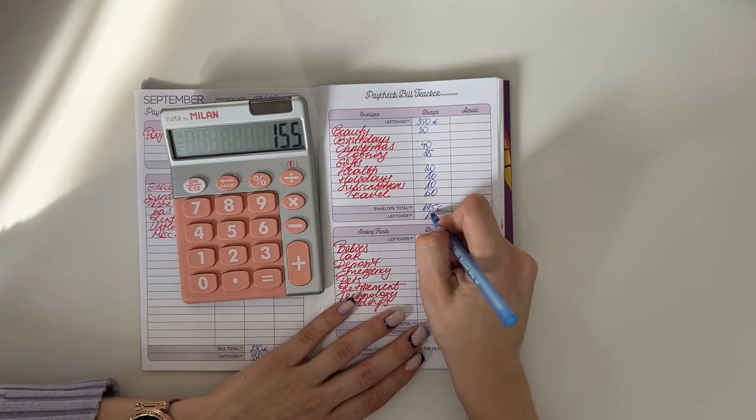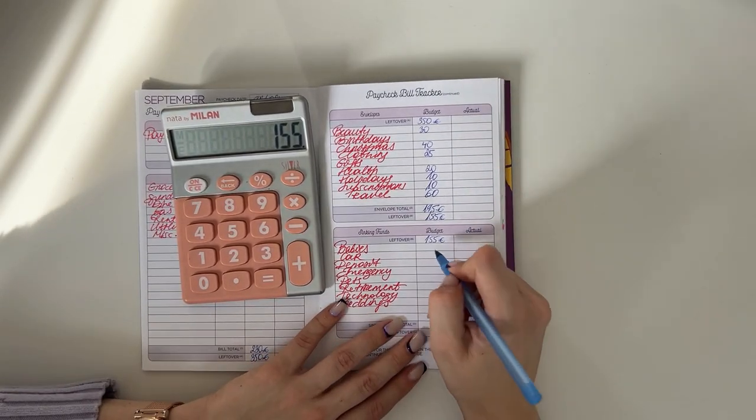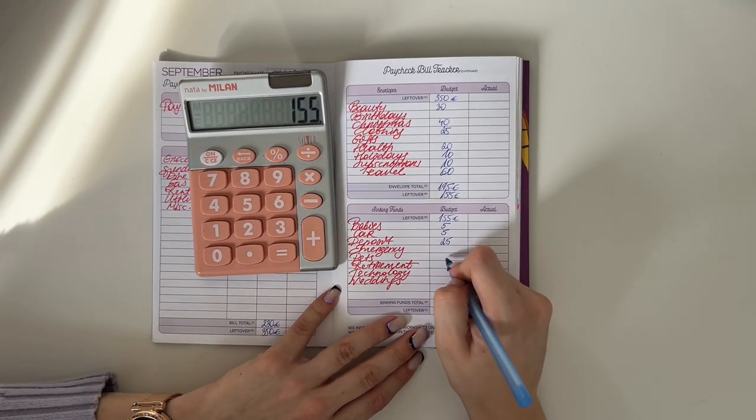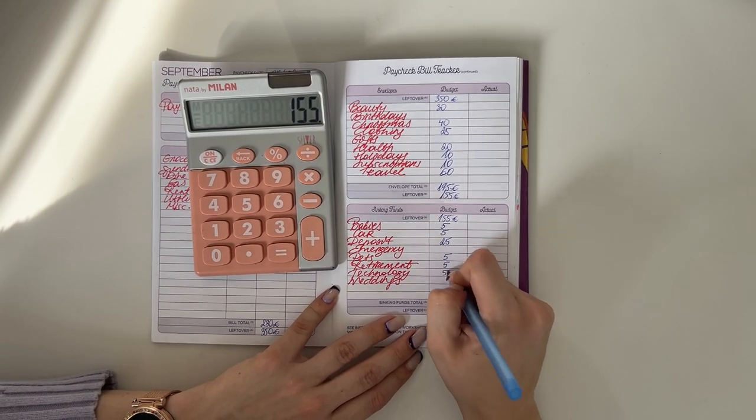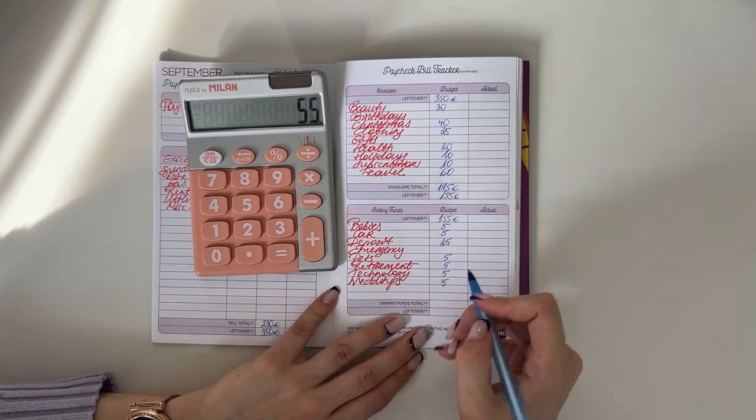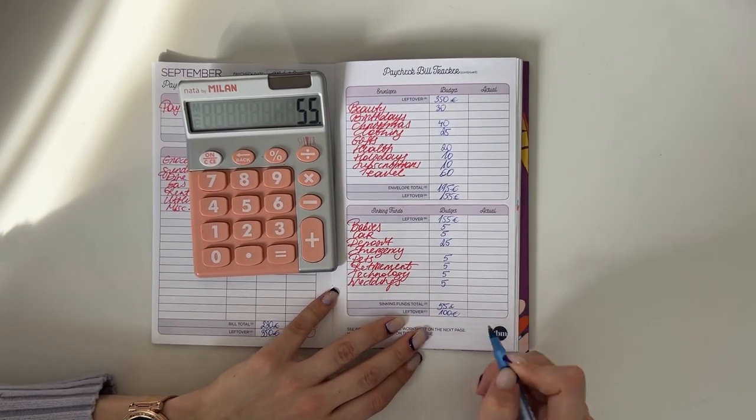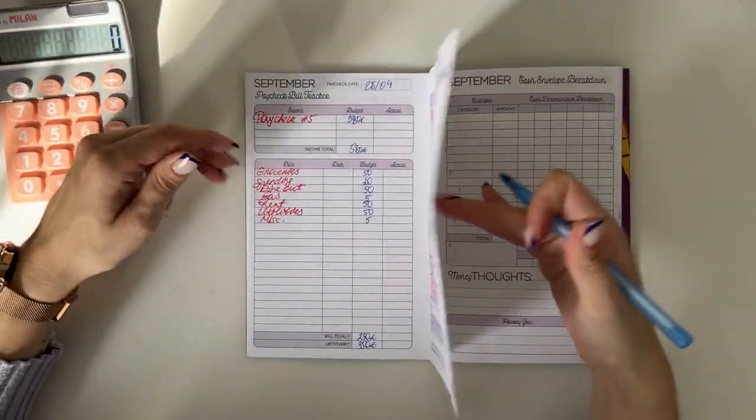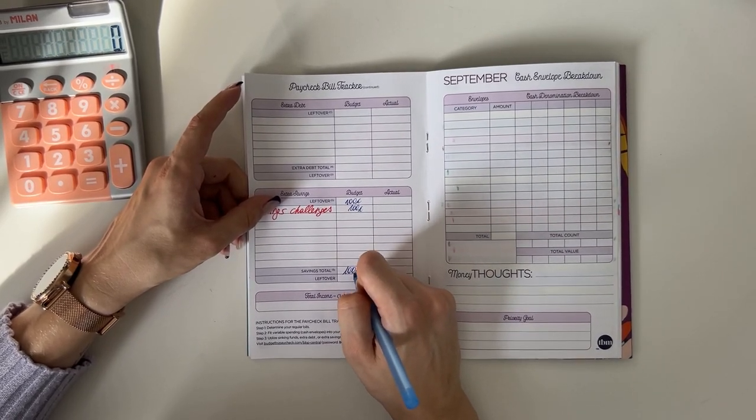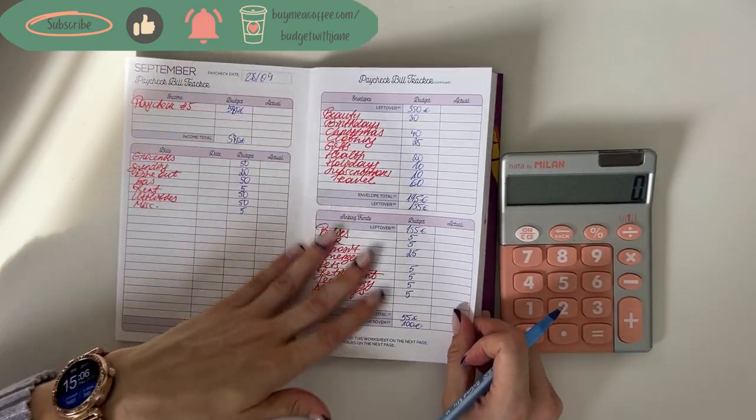So in total for short-term sinking fund we put $195. So $350 minus $195 is $155 we have left. We're bringing that down to long-term sinking funds. We're going to put $5 into babies, $5 into car, $25 in deposit, and $5 in pets, retirement, technology, and weddings each. That's in total $55. So $155 minus $55, that's easy, that's $100.